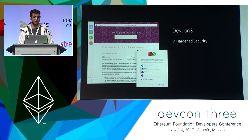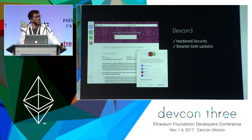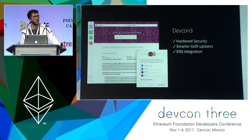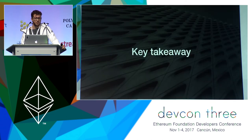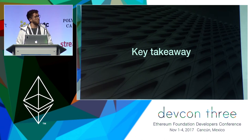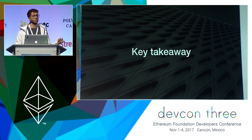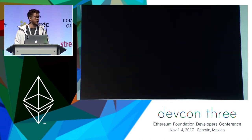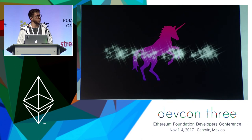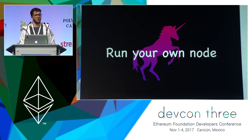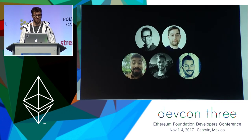So here at DevCon 3, I present this summary. We've got hardware security, smarter Geth updates — we no longer have to release MIST versions for each Geth update — ENS integration, Swarm beta, the light client, and Remix integration. The key takeaway is that MIST is a full browser that makes you run a full node. It can also be a light node, but for the good of the ecosystem, you should run your own node.